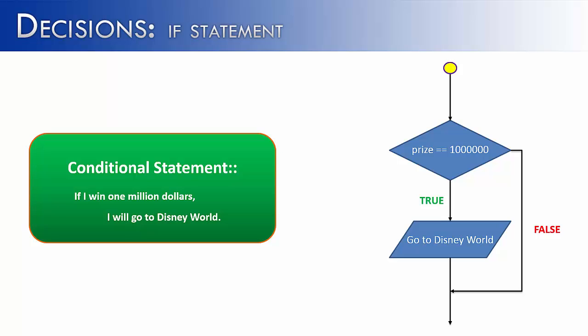Let's say a second scenario where I did win the million dollars. I would go and follow the true arrow and I would go to Disney World, then I would continue on with my life.